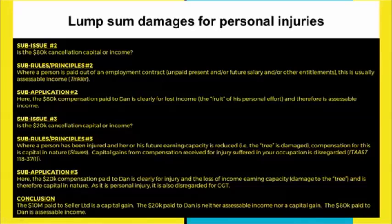Just to note: in an IRAC type problem with lots of issues and rules explained and analyzed separately, the conclusion ties all of these things together. That's one of the elegant features of this style — you don't have to do a little conclusion in multiple places. The client just needs to know, succinctly, what the result is. So here: the $10 million is capital, the $20,000 is neither assessable income nor subject to capital gains, and the $80,000 to the CEO is going to be regular assessable income.